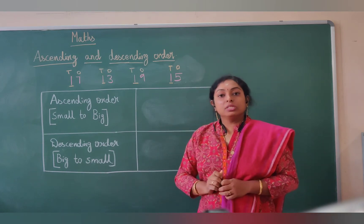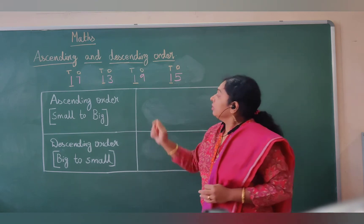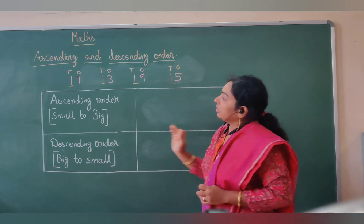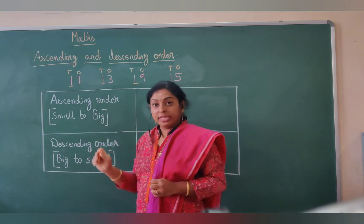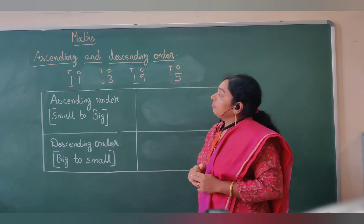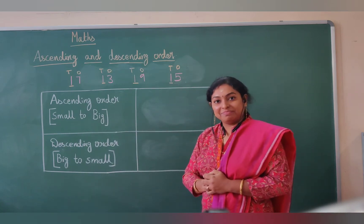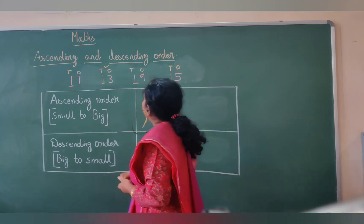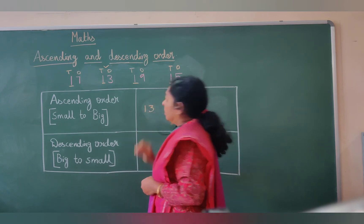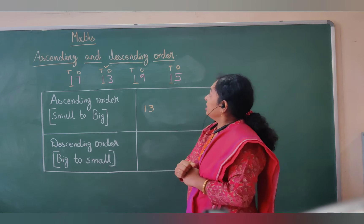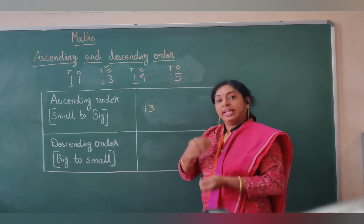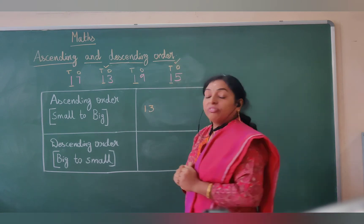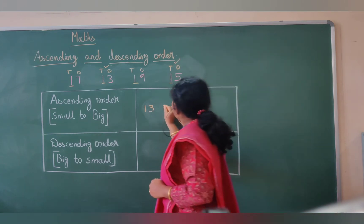So let us look at the numbers in the ones place. We have 7, 3, 9, and 5. Refer to the number sequence and tell me which is the smallest number. Number 13 is the smallest number of this sequence, so let me write 13 first. Then, which number is the next smallest? We have 15 — 15 is the next smallest number.